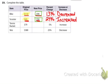Taking a look at problem 23, the tennis racket and skis. We are increasing the price of the tennis racket by 5%. So we start with our original price. 79 represents 100%. What are we doing?